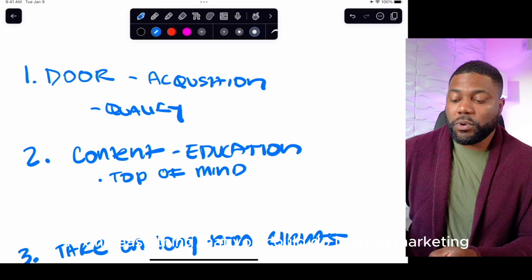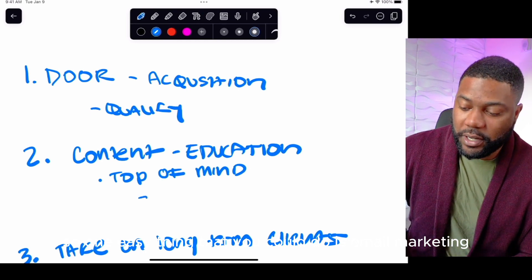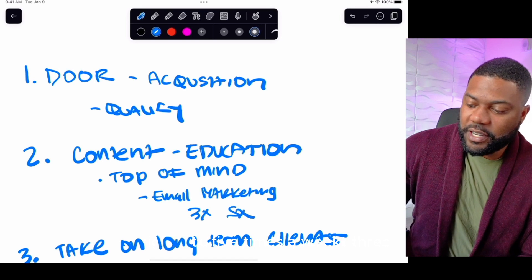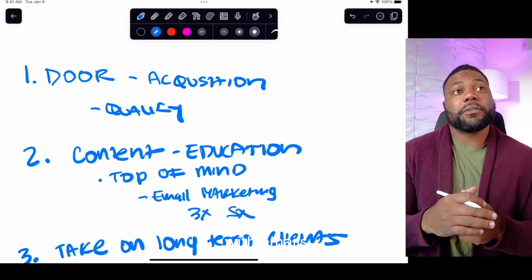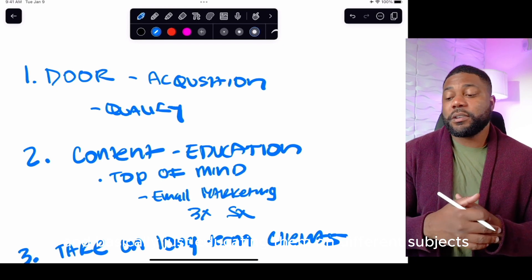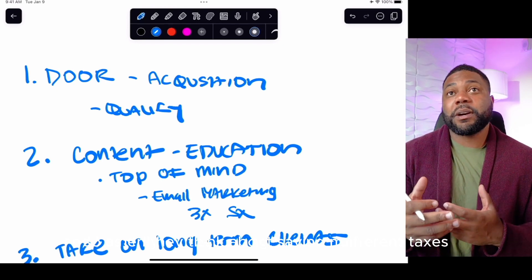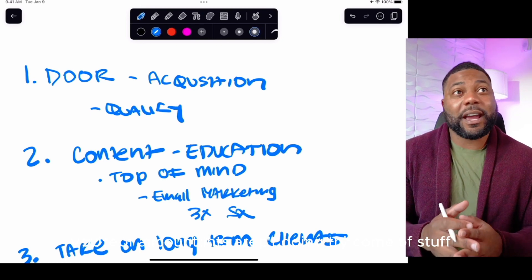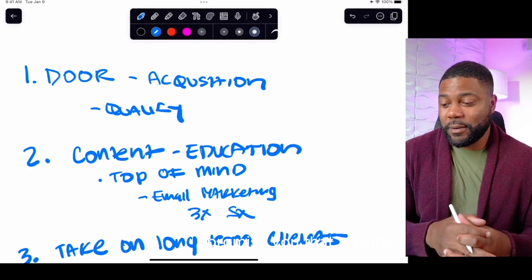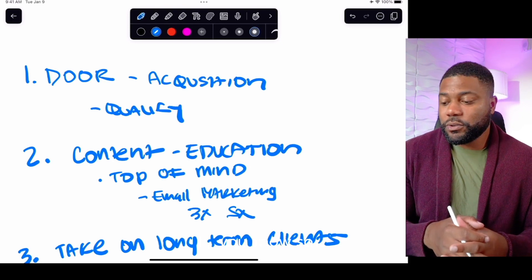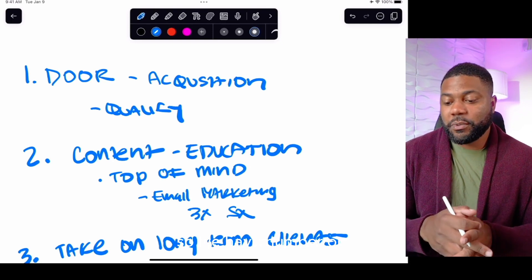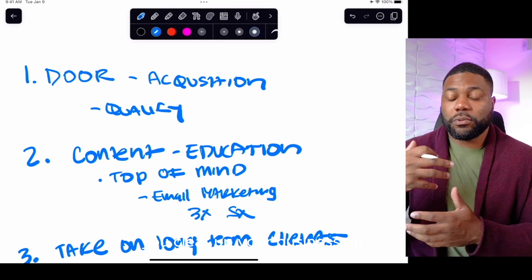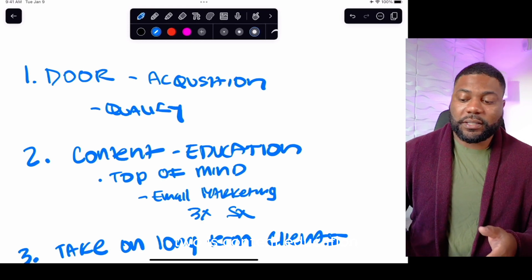So one easy thing that you could do is email marketing. You can email your list three to five times a week with emails and basically just educating them on different subjects. So when they think about saving money on taxes during tax season, you're going to be the first person they come to because 90% of accountants aren't doing this type of stuff. I promise you that. So that's a major aspect. So we have number one down, the door acquisition, how you guys need to make sure you clear up your business model.